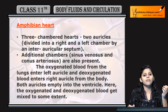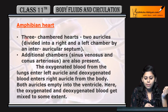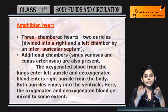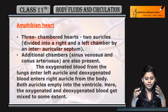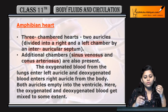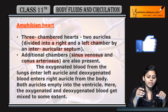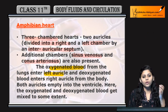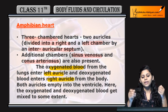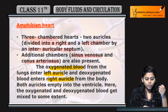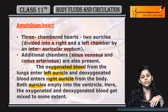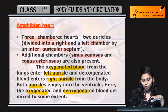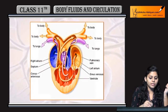Coming to amphibian heart. Amphibian heart is 3-chambered — 2 auricles and 1 ventricle. The 2 auricles are divided into right and left chambers by an inter-auricular septum. Additional chambers — sinus venosus and conus arteriosus — are also present in amphibians. Oxygenated blood from the lungs enters the left auricle, and deoxygenated blood from the body enters the right auricle. Both auricles empty into the single ventricle.